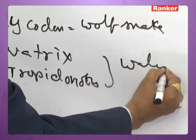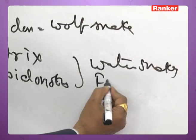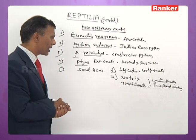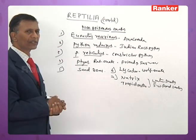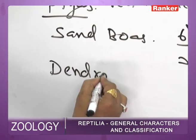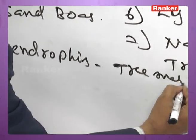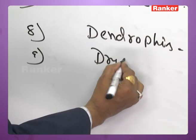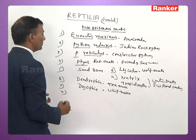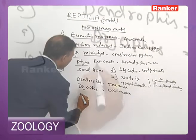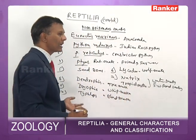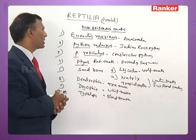Other non-poisonous snakes include Natrix and Tropidonotus (freshwater pond/water snakes), Lycodon (wolf snake), Dendrophis (tree snake), Dryophis (vine snake), and Typhlops (blind snake), which is parthenogenetic, resembles an earthworm, and feeds on termites.